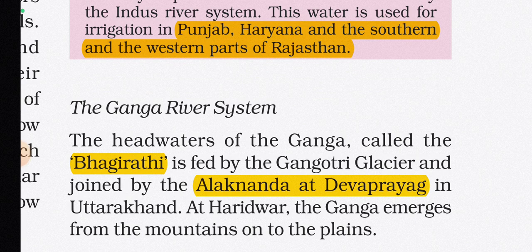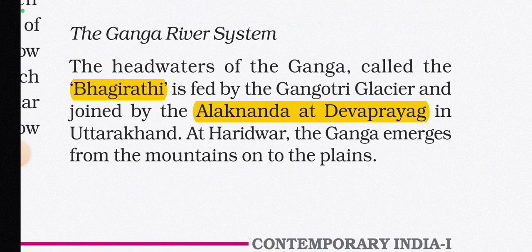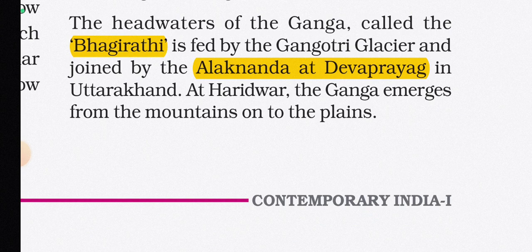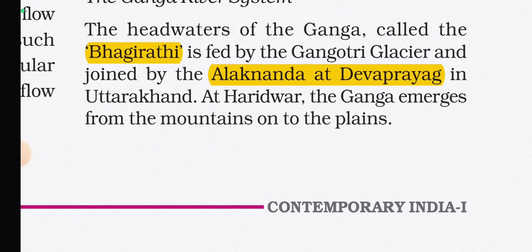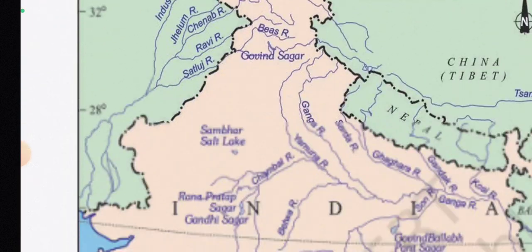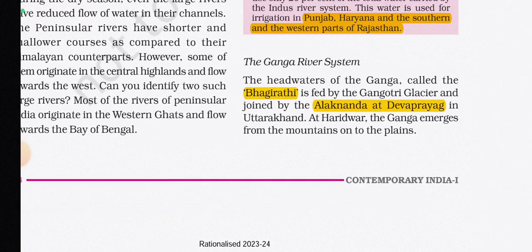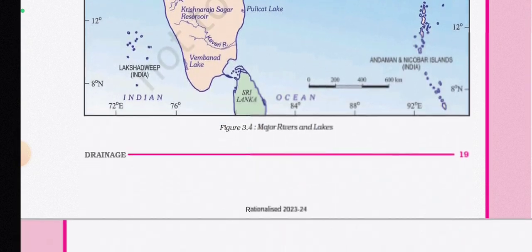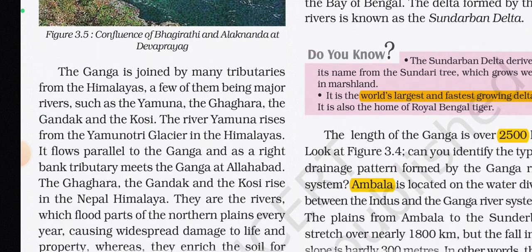The Ganga River System: The headwaters of the Ganga, called the Bhagirathi, are fed by the Gangotri Glacier and joined by the Alaknanda at Devprayag in Uttarakhand. At Haridwar, the Ganga emerges from the mountains onto the plains.